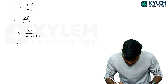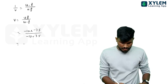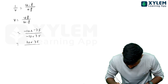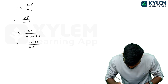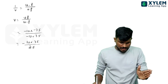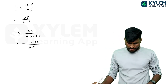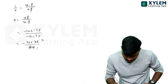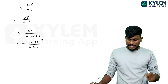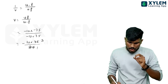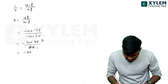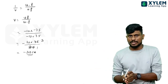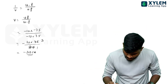For case 1, u is minus 10cm and f is minus 7.5cm. So v equals minus 10 into 7.5 divided by minus 10 minus minus 7.5, which gives minus 10 plus 7.5 equals minus 2.5 in the denominator. That gives v equals minus 30cm.